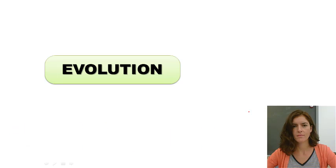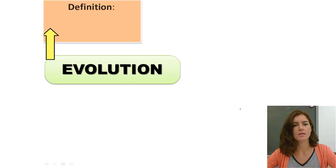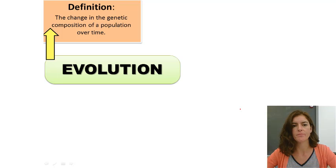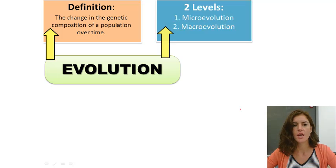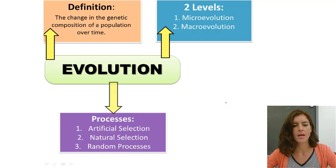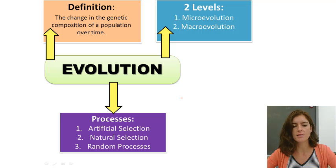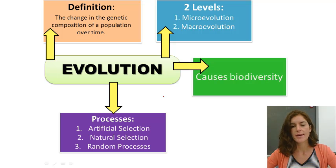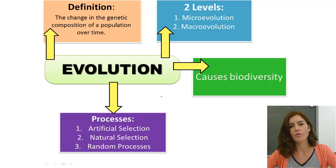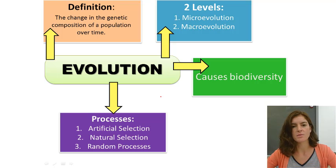Hi everybody, it's Ms. Bresnahan here and I'm going to talk to you about evolution. The definition of evolution is the change in the genetic composition of a population over time. There are two main levels: microevolution and macro. There are three main processes: artificial selection, which humans do; natural selection, which occurs in the environment; and random processes as well. Evolution causes biodiversity — more variety in genes, more variety in types of species, and ecosystem diversity.